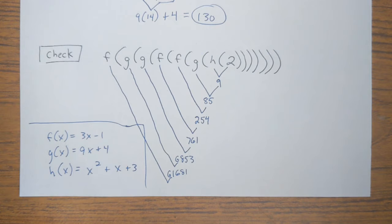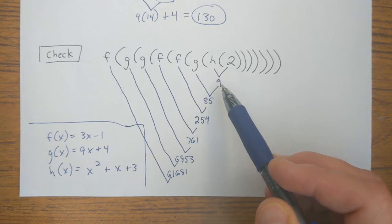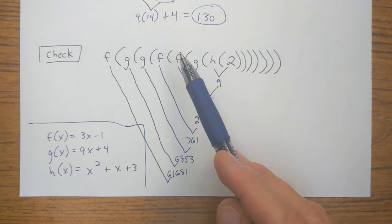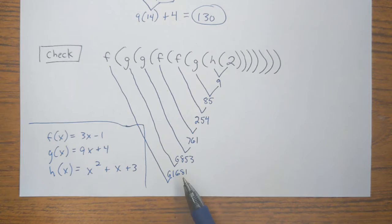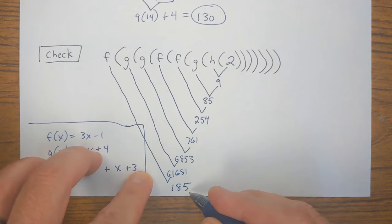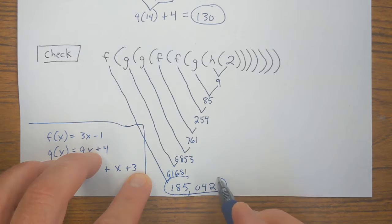All right, and here is your answer. I'm sure you had to work for it a little bit. Real quick, how I broke this down. If you plug 2 into H, you get 9. Plug 9 into G, you get 85. 85 into F, you get 254. All the way down to this very last step, we had to plug 61,681 into F. And, drum roll please, final answer, 185,042. If you got that right, give yourself a pat on the back for that one.